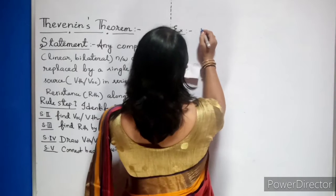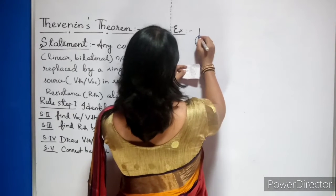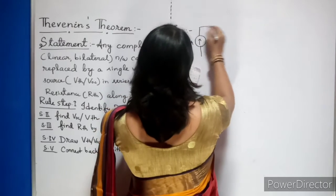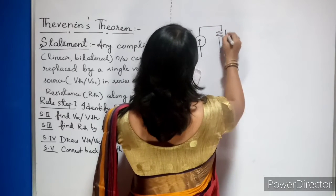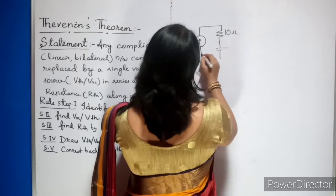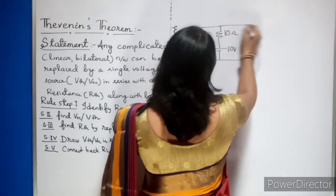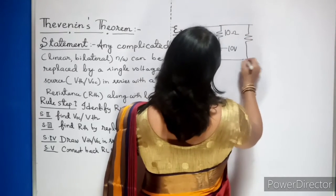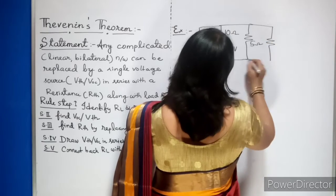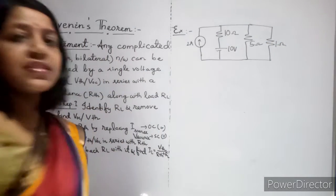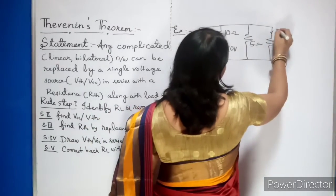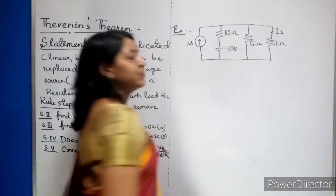I am taking this example circuit: a current source of 2 amps, a 10 ohm resistor, a voltage source of 10 volts, another resistor of 5 ohms, and a 1 ohm resistor. Imagine this is the circuit given, and they are asking you to find the current through the 1 ohm resistor.